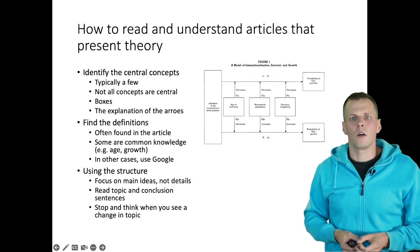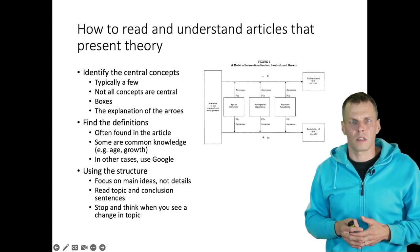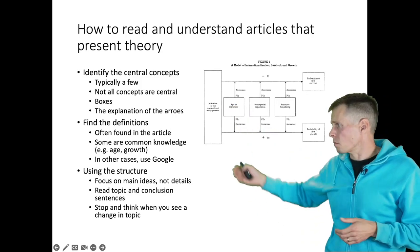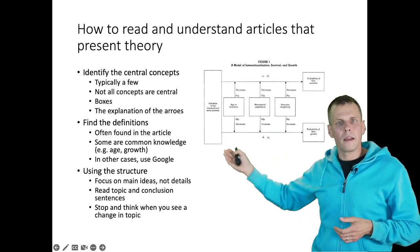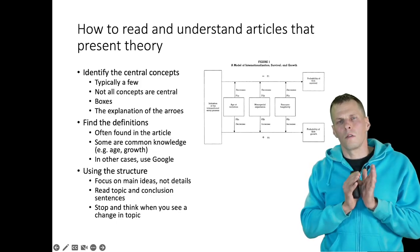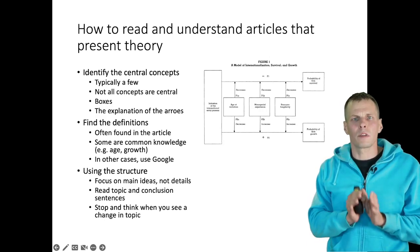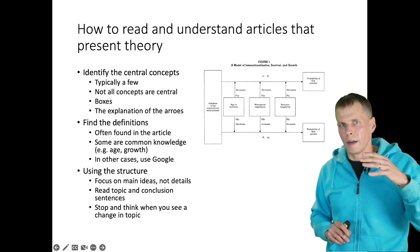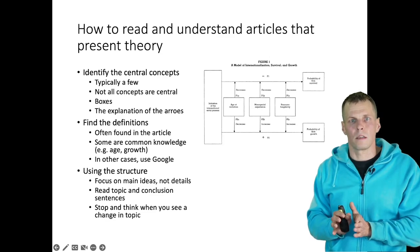To summarize how to read and understand articles that present theory and data: first, identify the central concepts — typically a few. Not all are boxes; some like dynamic capabilities and imprinting are part of the arrows as mechanisms. Then find the definitions, using the structure of the article to do so. Definitions are almost always found in either the introduction or the theory section, and a concept's definition is almost always mentioned in the topic sentence of a paragraph. So go through the topic sentences and look where the concept is discussed — you'll probably find the definition there. Understanding the structure will make you a more efficient and more effective reader.